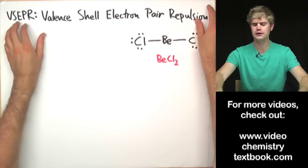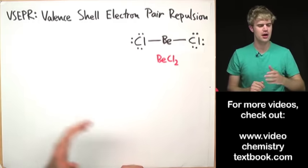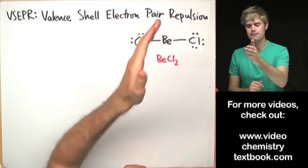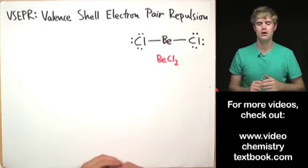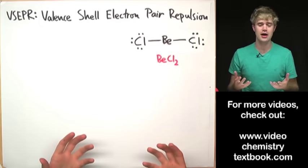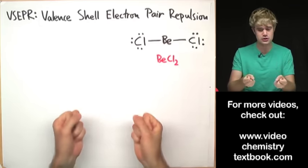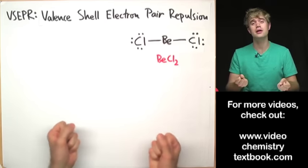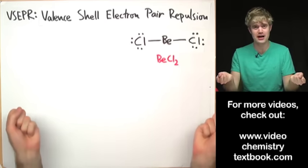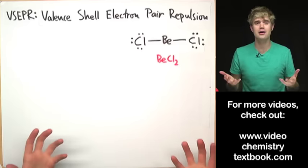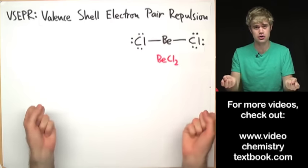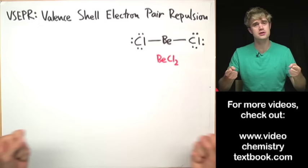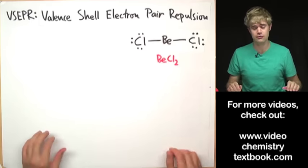A little bit about the VSEPR rules: VSEPR stands for valence shell electron pair repulsion, which is a fancy way of saying that electrons or pairs of electrons want to push away from each other and want to be as far away as possible from each other. That makes sense because electrons have negative charges, so opposite charges repel and these things are going to want to be far away from each other.